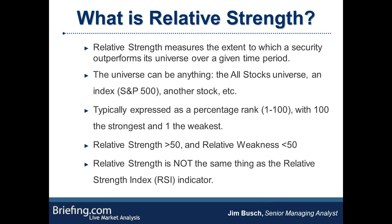Relative strength is typically expressed as a percentage rank from 1 to 100, with 100 being the strongest and 1 the weakest. 50 is sort of a midpoint — stocks above 50 are showing relative strength and stocks with values below 50 are showing relative weakness. And as a final point, there's a common misconception: relative strength is not the same thing as the RSI indicator.